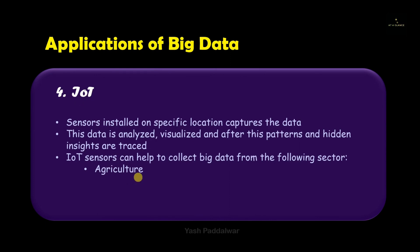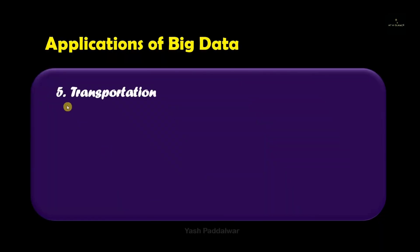IoT devices such as sensors and actuators can be used widely across sectors — for example, in the agricultural sector. They can also be used to monitor air quality and traffic, and can make proper predictions and decisions based on the data collected.